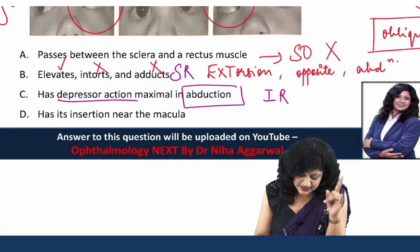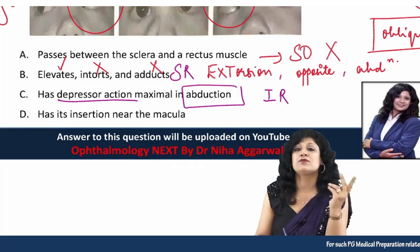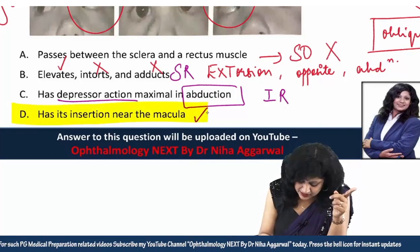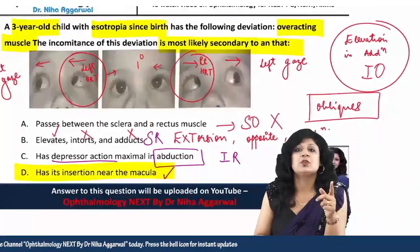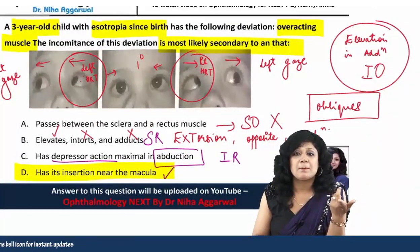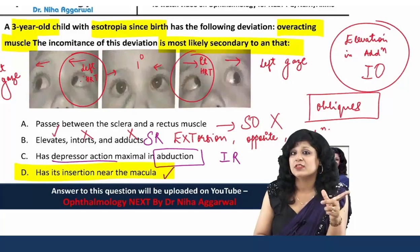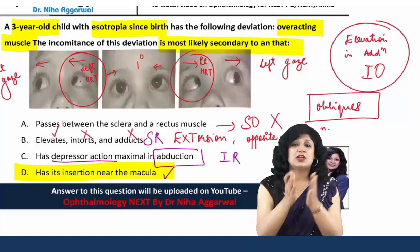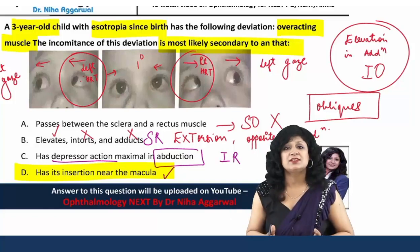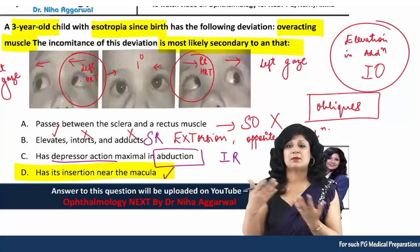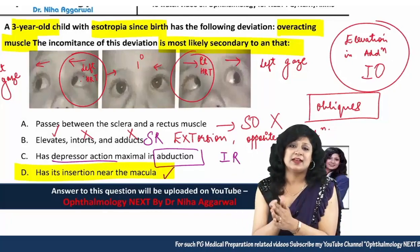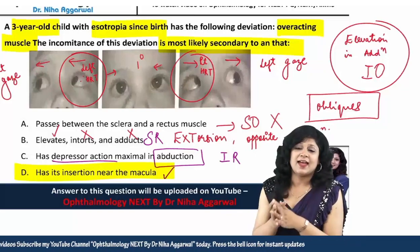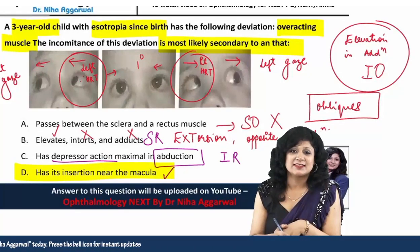By exclusion, even before reading option four, we know the answer is option four. Option four states: this muscle has its insertion near the macula — and that is exactly the inferior oblique. This is a great example of a question where both clinical and factual knowledge are required together: knowing extraocular muscle actions, primary/secondary/tertiary actions, origins, insertions, and maximum motility in adduction and abduction. Keep studying and best of luck in your upcoming exam!